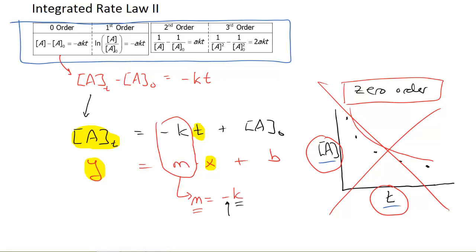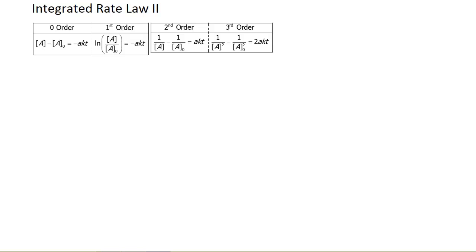Let's try this again for second order. For second order, I have 1 over [A] at any particular time minus 1 over [A]₀ equals akt. Once again, let's assume that the stoichiometric coefficient a equals 1, so we get kt.